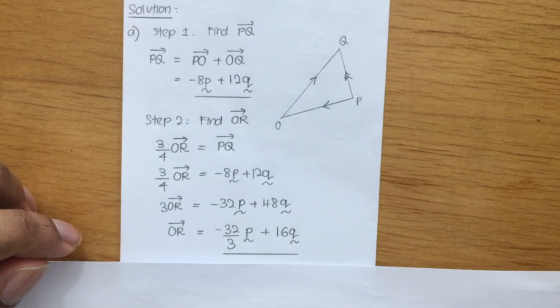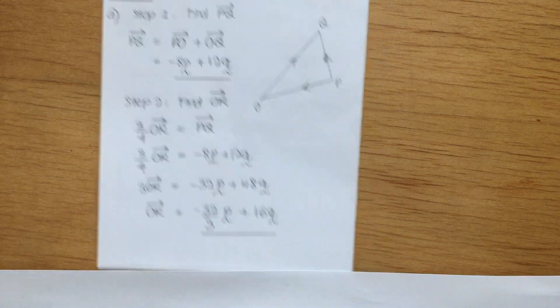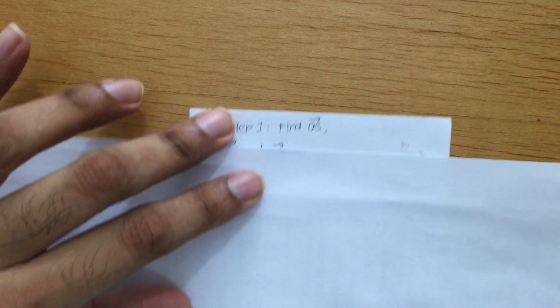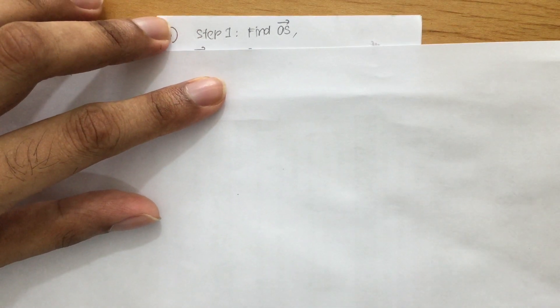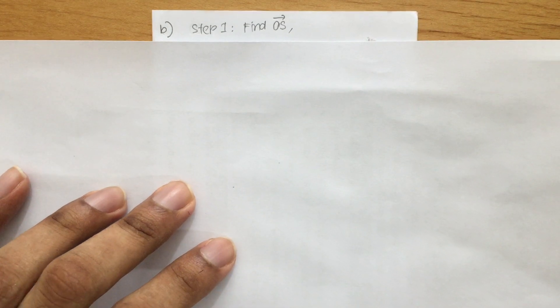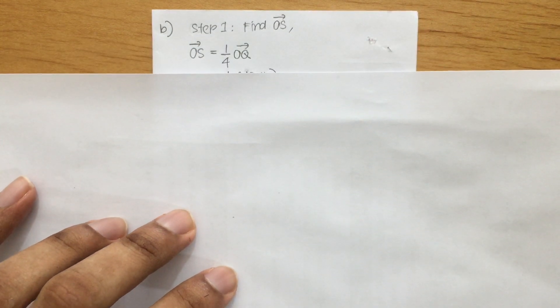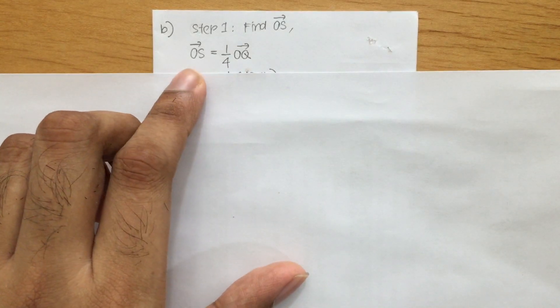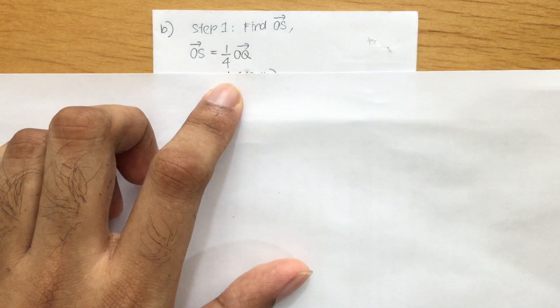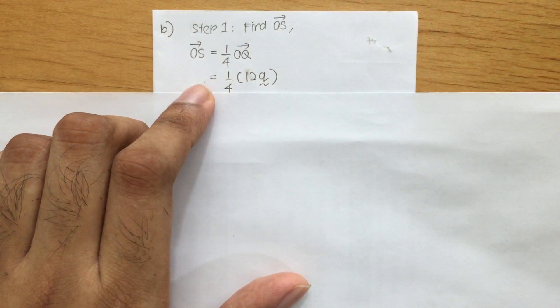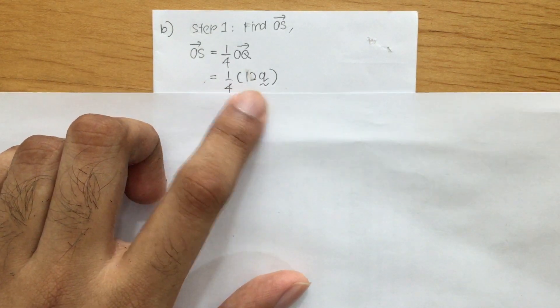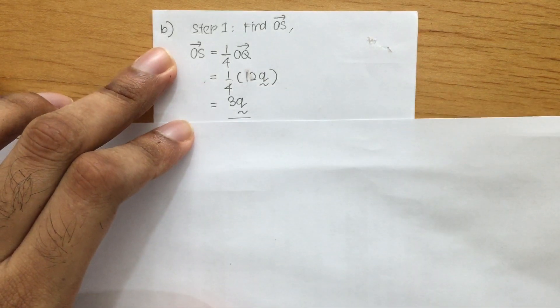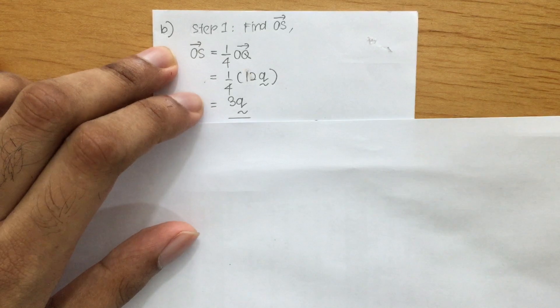Now let us proceed to find Vector PS. Before finding Vector PS, we first need to find Vector OS. From the question, Vector OS is equal to 1 over 4 of Vector OQ. Since Vector OQ is 12q, Vector OS equals 1 over 4 times 12q, which gives 3q.